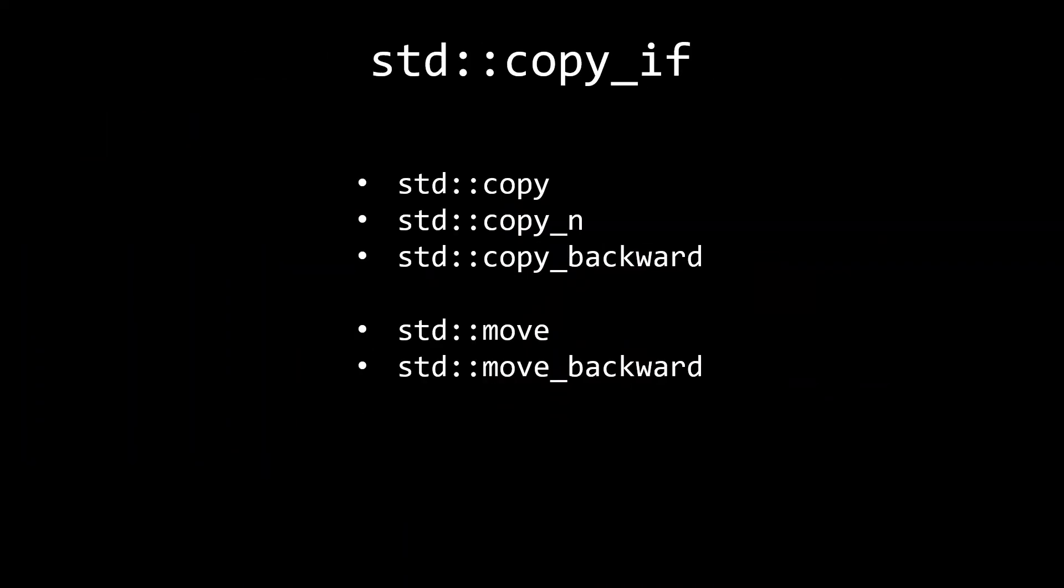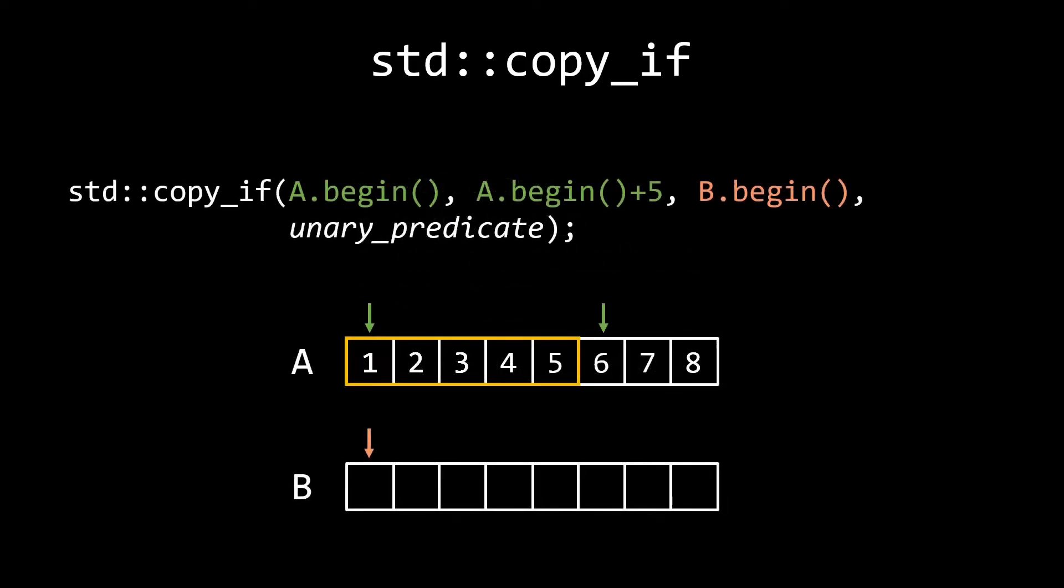We have now covered all the unconditional copy and move algorithms. There is only one algorithm left to talk about, std::copy_if, which performs a conditional copy. Just like std::copy, copy_if takes two iterators for the source range, and one for the beginning of the destination range. The difference is that copy_if also takes a fourth parameter, a unary predicate that can be applied to each of the elements to evaluate whether or not it should be copied. You would usually use a function pointer or a lambda for this predicate, but other callable objects are also allowed.